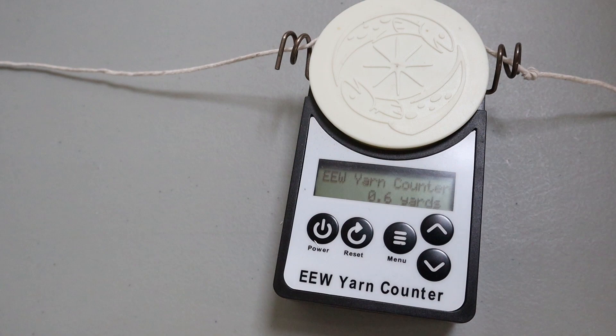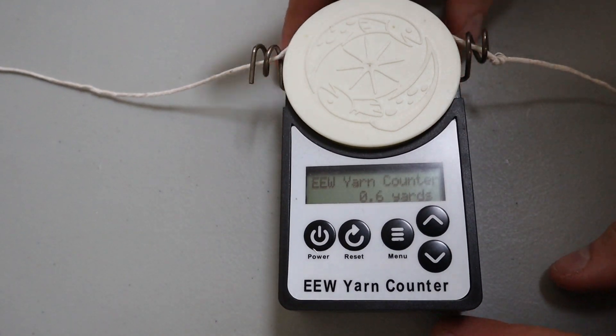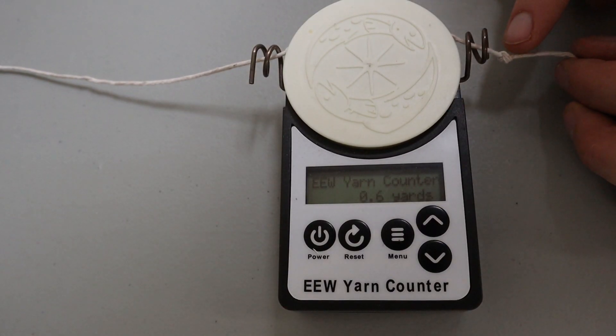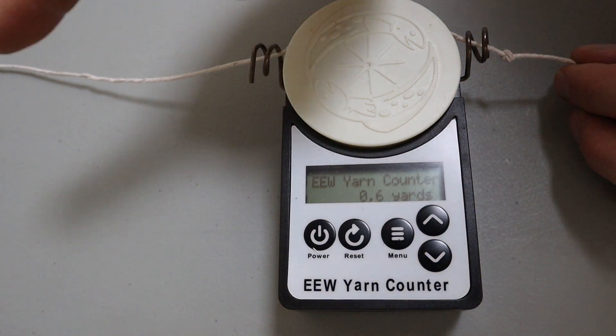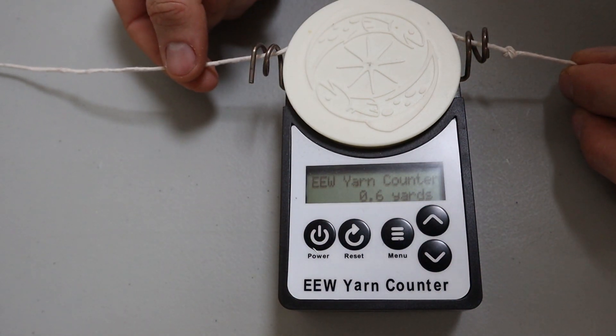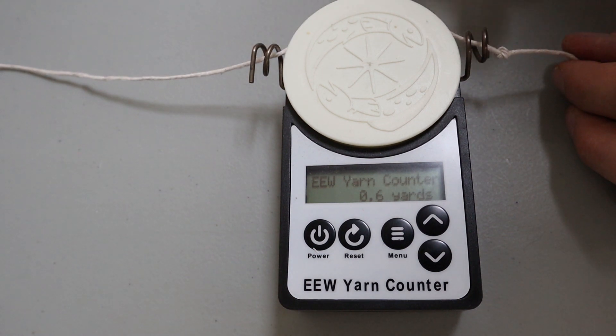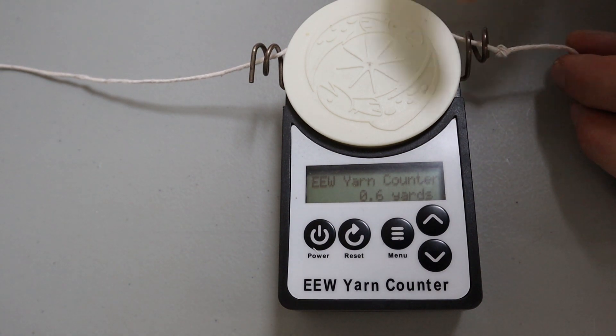Now I'll show you one of the ways I've been measuring the accuracy of the yarn counter. So this string here has a little knot here, and then there's a black mark over in that direction that is at exactly 10 yards. So I'm just going to pull this string through, and when the black mark gets to exactly here, it should be at 10 meters.